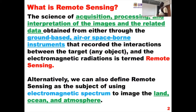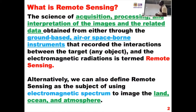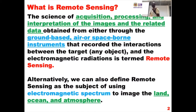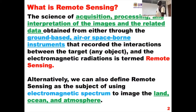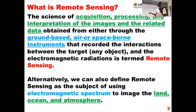Alternatively, we can also define remote sensing as sensing an object or a body. Using the basic electromagnetic spectrum to image, the object could be land, could be ocean, or the atmosphere.